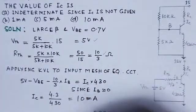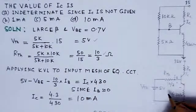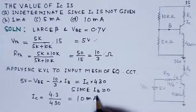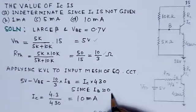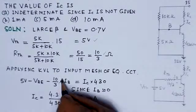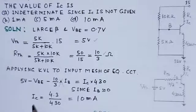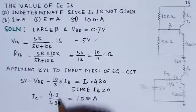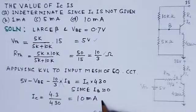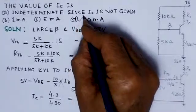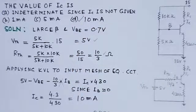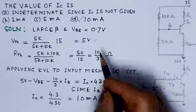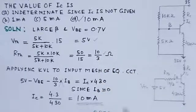Since IB is zero (because beta is large), IC equals IE, and the IB term cancels out. So we get IC = (5 − 0.7) / 430 = 4.3 / 430, which comes out to be 10 milliamps. Therefore, option D is the correct choice — the value of the collector current is 10 milliamperes.